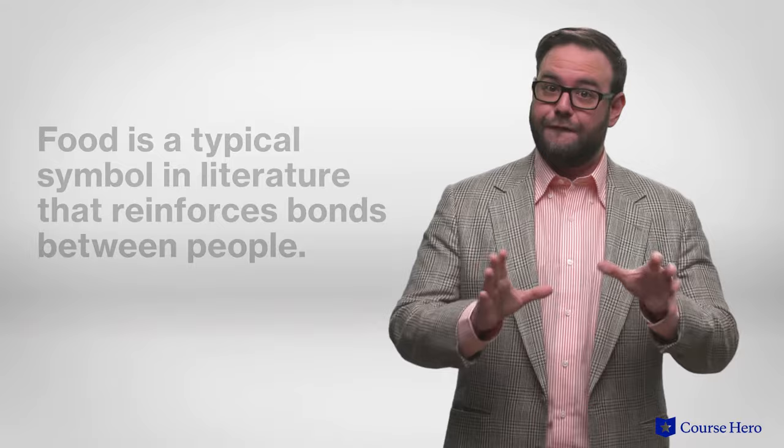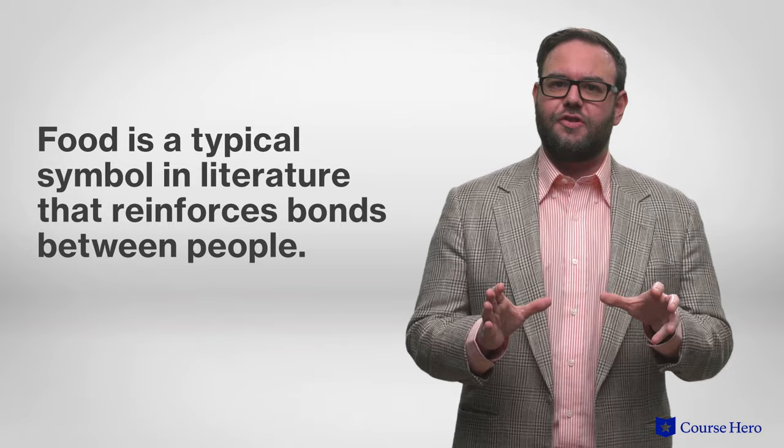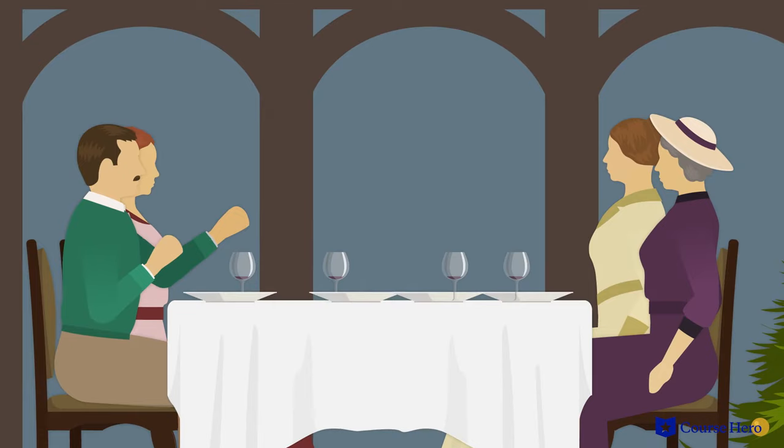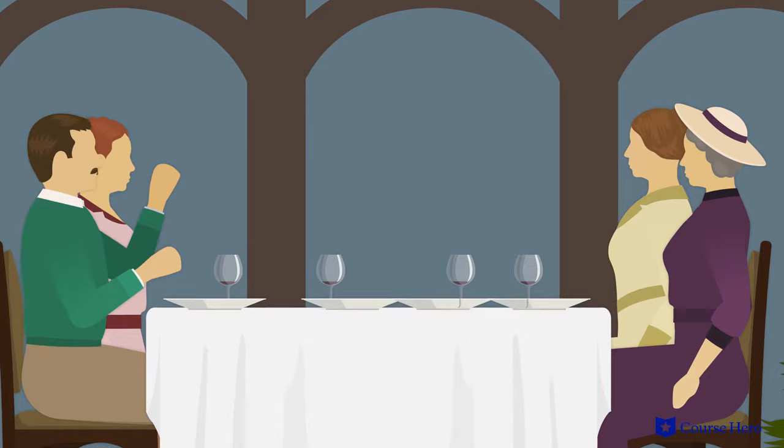A few important symbols run through the collection. Food is a typical symbol in literature that reinforces bonds between people. Sharing meals is a way of strengthening social bonds. In An Encounter, the narrator and Mahoney share currant buns, chocolate, biscuits, and lemonade. A dinner scene in After the Race provides an opportunity for a group of young men to converse and form closer friendships. Much of the social connection in The Dead centers around a dinner party that could, but often fails, to bring friends and family together.